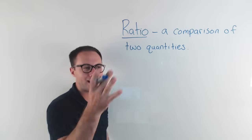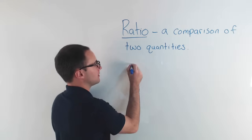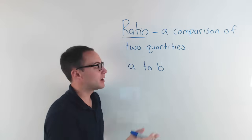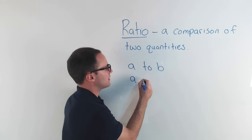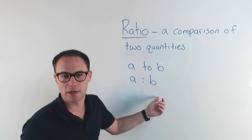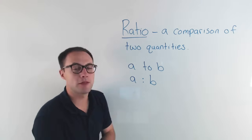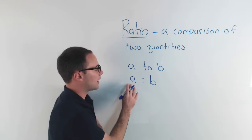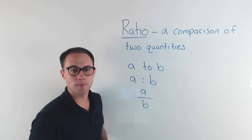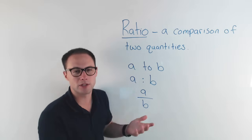For example, if we're comparing A to B, I can write the ratio as A to B — spelling out the word 'to'. I could also write it as A colon B, and I would read it as A to B as well, using the colon to compare the two. And then the third way, I could write it as a fraction: A over B. So those are the three ways that we can write ratios. They would all be equivalent to each other.